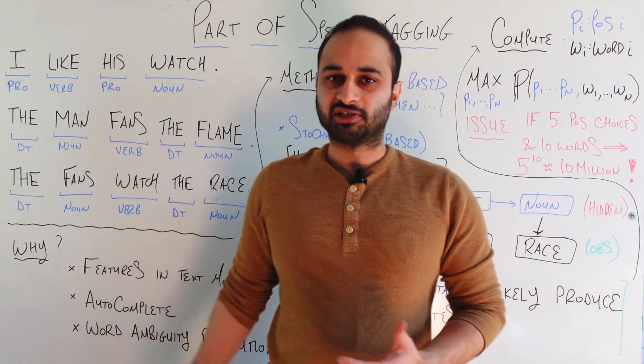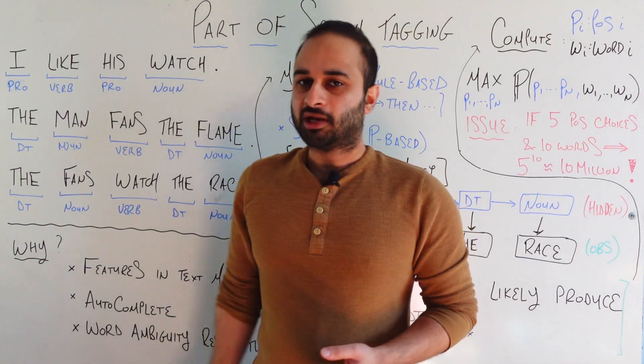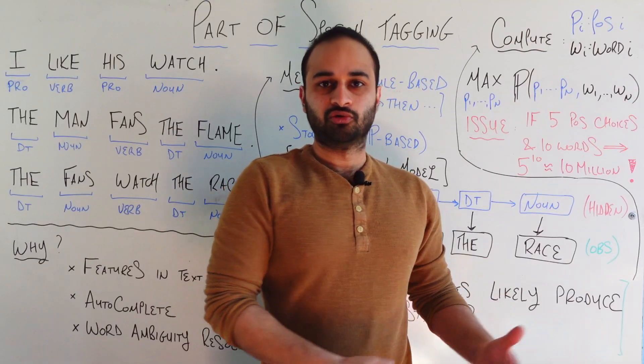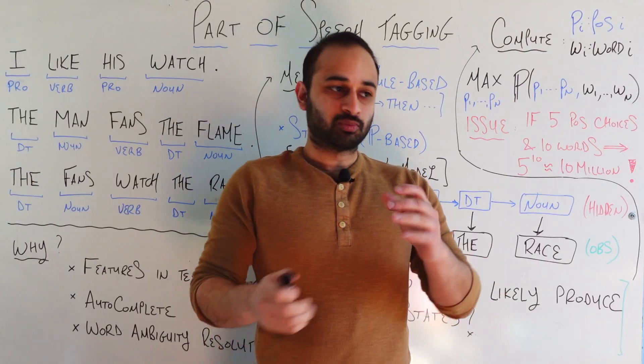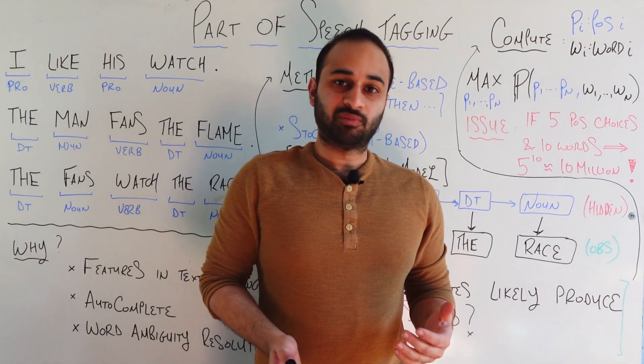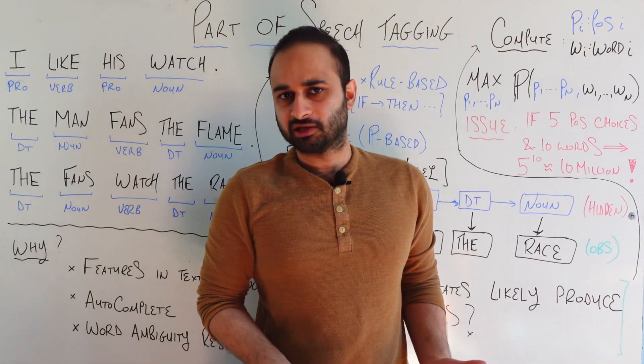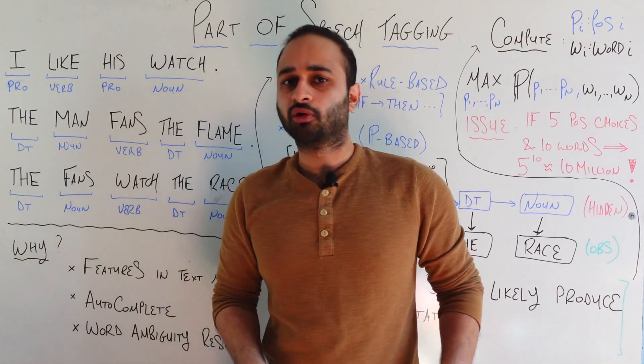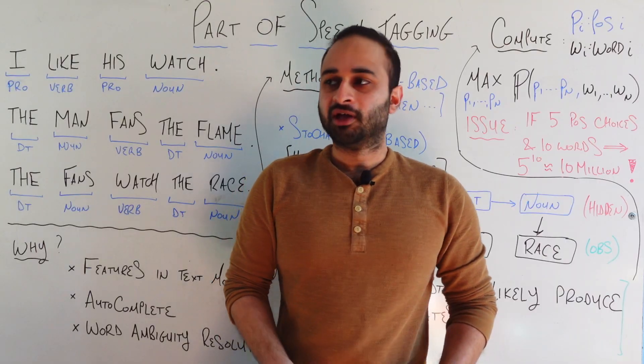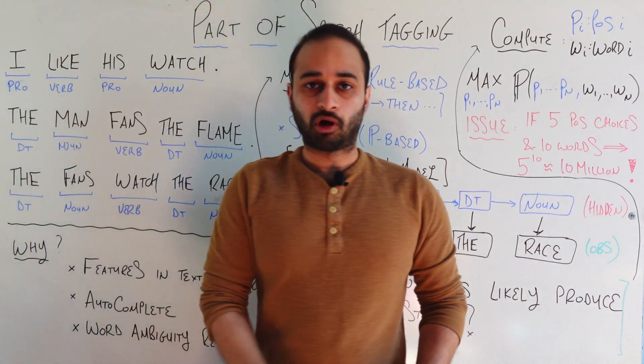So we have three sample sentences here. For example, the first one says, I like his watch. Now in English and most other languages too, each word is belonging to a general category called a part of speech. For example, some easy ones are nouns and verbs. Nouns being people, places, or things. That's what we first learned in elementary school. Verbs being action words, things that describe an action you take. So for example, in this very short sentence, we have four words.